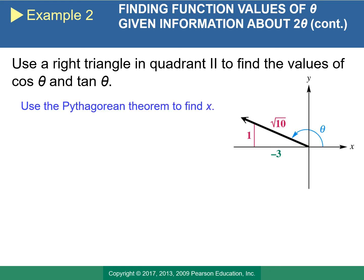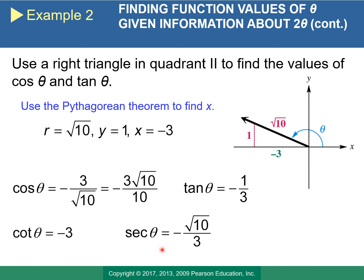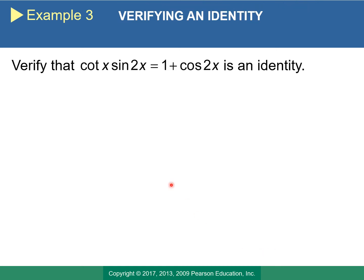Now that we have sin θ = 1/√10, we use sine as opposite over hypotenuse and the Pythagorean theorem to find the adjacent side. With all three sides of the reference triangle known, we find: cos θ = −3√10/10, tan θ = −1/3, cot θ = −3, sec θ = −√10/3, and csc θ = √10. The negative signs on cosine and tangent reflect quadrant two.